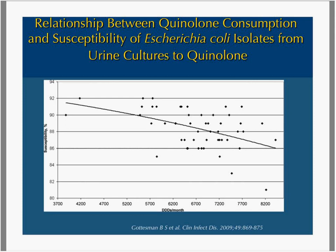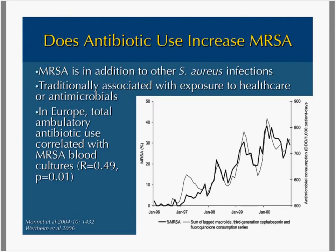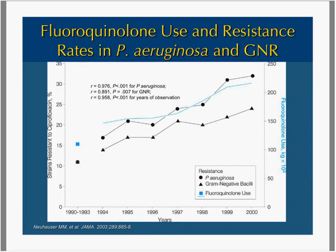Similarly, there is a very interesting natural experiment and data from Europe where they looked at MRSA in addition to other Staph aureus infections, comparing MRSA — shown by the darker line — with the lagged use of outpatient antimicrobials: macrolides, third-generation cephalosporins, and quinolone consumption. This isn't proof, but it's certainly an association between the increase in MRSA and outpatient use. Data published almost 20 years ago also show fluoroquinolone use correlated with resistance rates in gram-negatives. The point is that we can really show that the use of antimicrobials drives resistance.